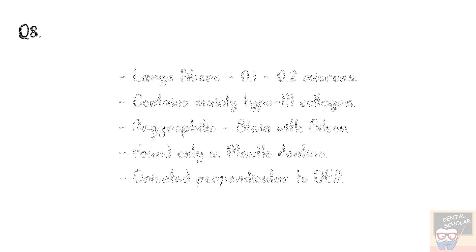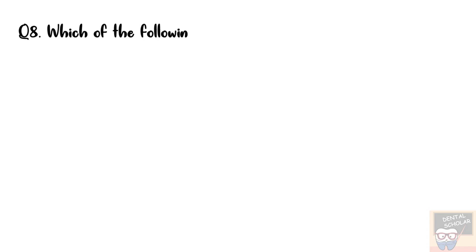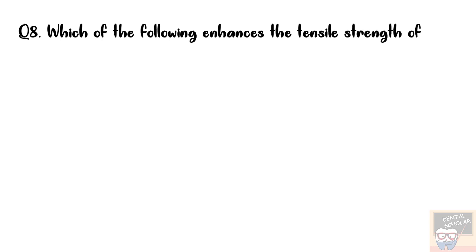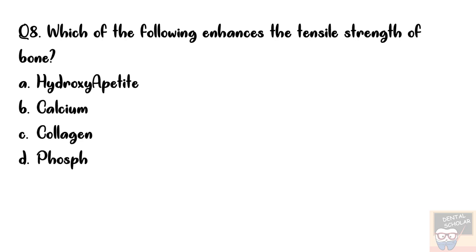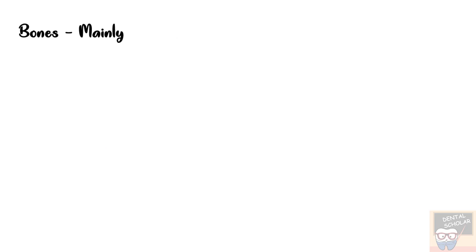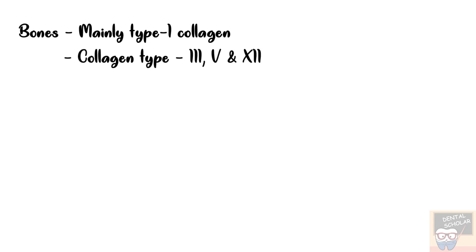Question number 8: Which of the following enhances the tensile strength of bone? Options are hydroxyapatite, calcium, collagen, and phosphorus. The answer is option C, collagen. The organic framework of bone is mainly made up of type 1 collagen, along with some collagen types 3, 5, and 12. It is collagen that imparts tensile strength to the bone.